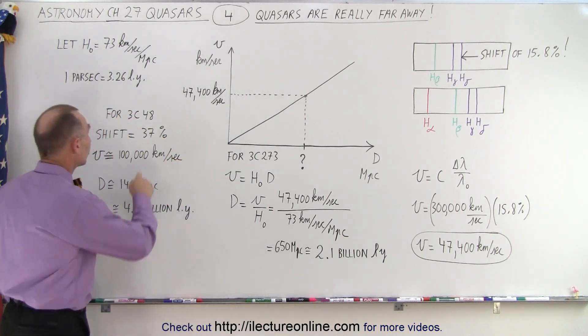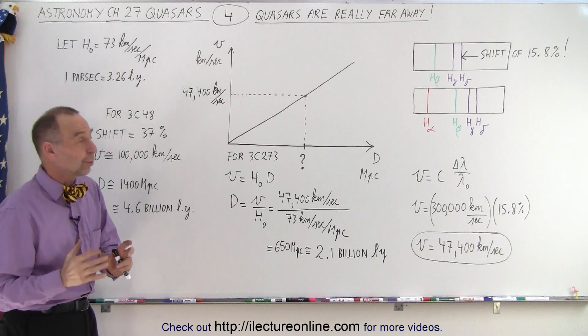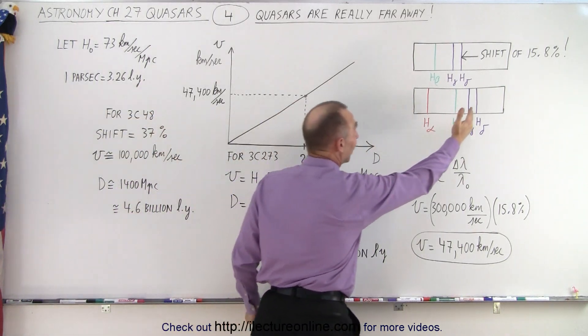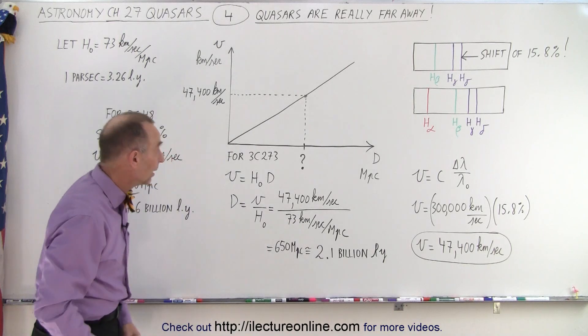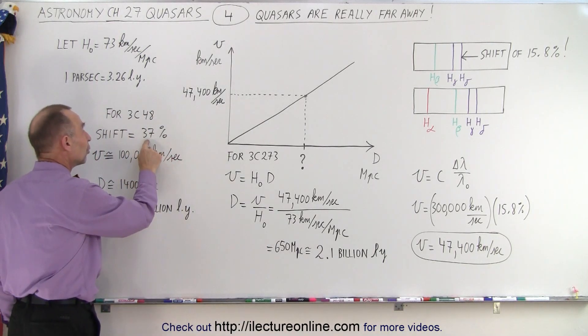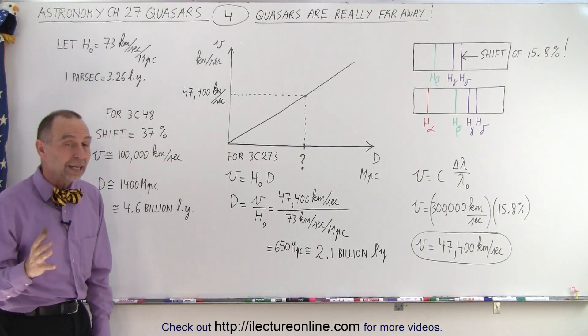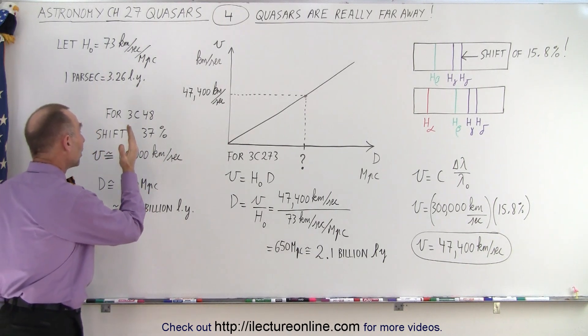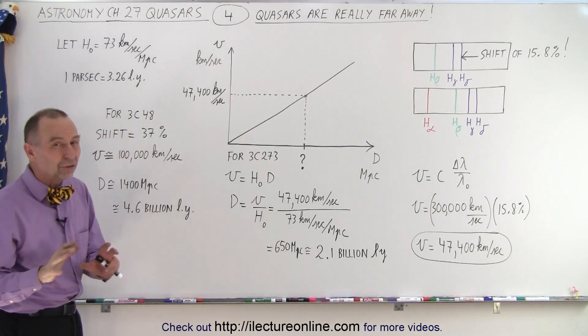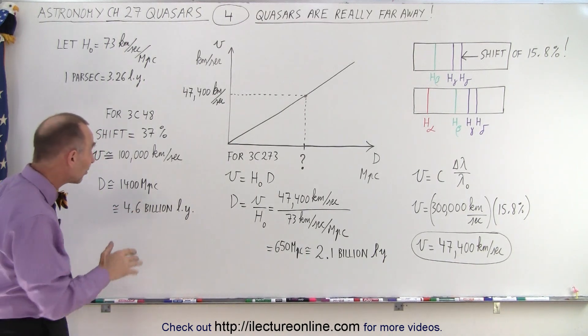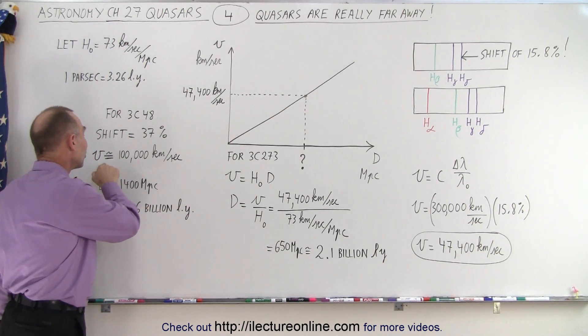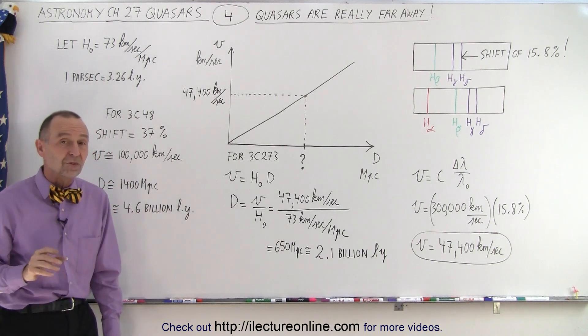And then we measured 3C48, and we began to realize that the shift of those lines was even much more pronounced than it was for 3C273. Those lines had been shifted by 37 percent. Now we're beginning to see speeds that are more than one-third the speed of light. And so, of course, now we had to take into account the relativistic effects, because things were moving so fast. We equated that the velocity was about 100,000 kilometers per second.